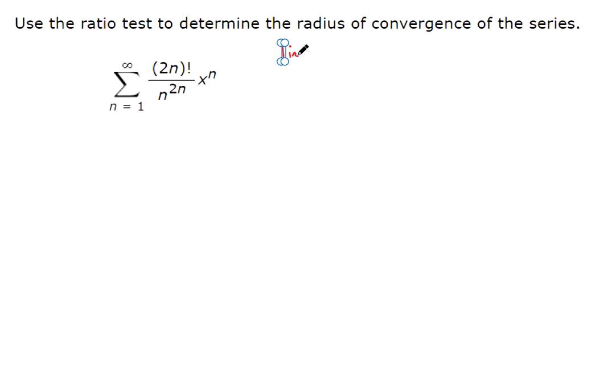So we're asked to use the ratio test to determine the radius of convergence. The ratio test is the limit as n goes to infinity for the a sub n plus 1 term divided by the a sub n term, and that's the absolute value of that limit.